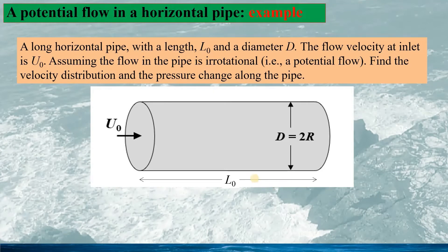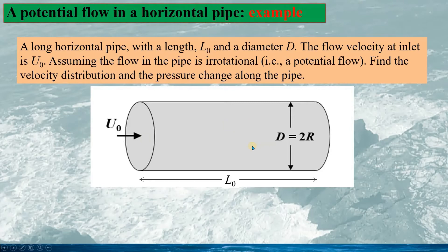The example is a long horizontal pipe with length L0 and diameter D, and the flow velocity at the inlet is U0. The flow in the pipe is assumed to be irrotational — the potential flow. We need to find the fluid velocity distribution in the pipe and the pressure change along the pipe.